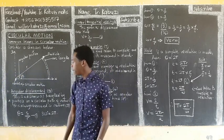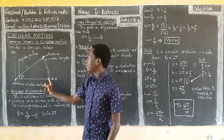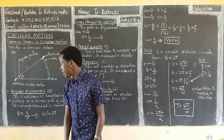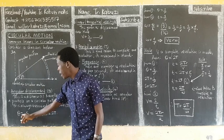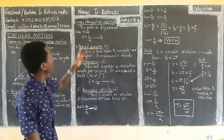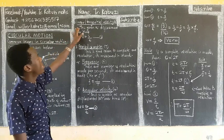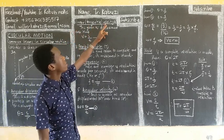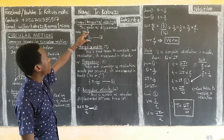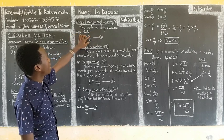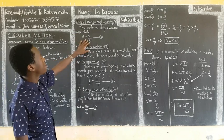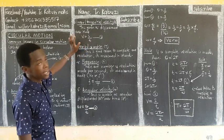The angular displacement is given by theta equals S over R — that's equation one. The second term is the linear velocity, also called the tangential velocity, V. This is given as displacement over time T, which is the distance S over time T — that is equation two.